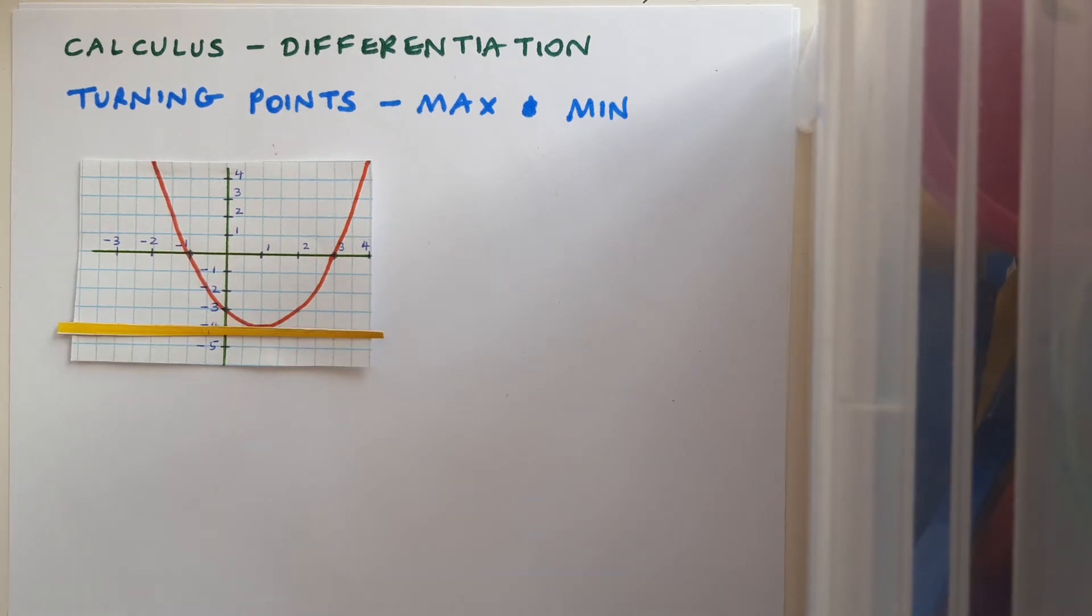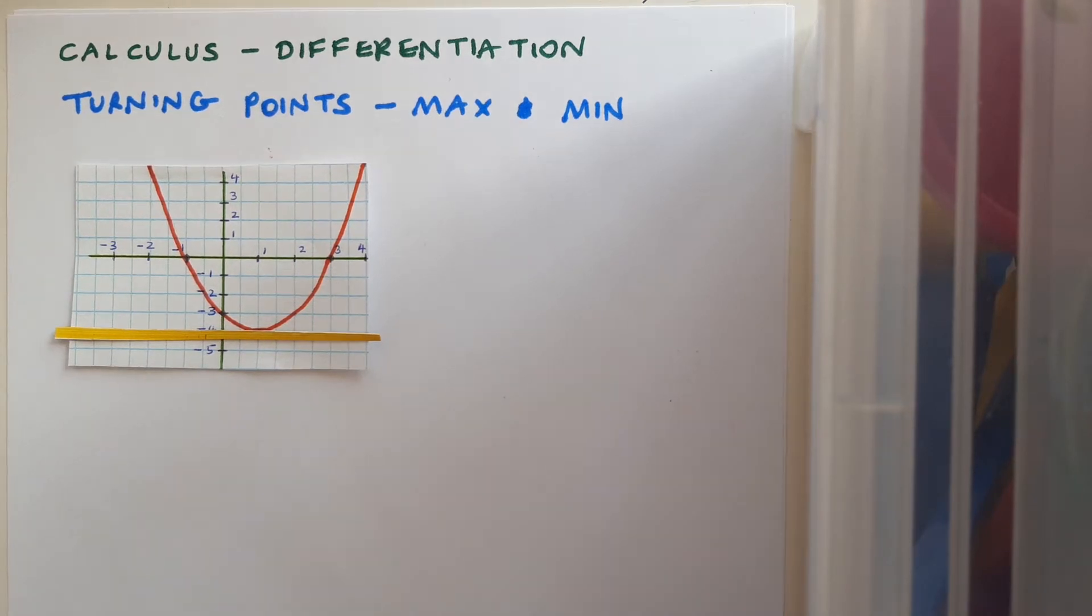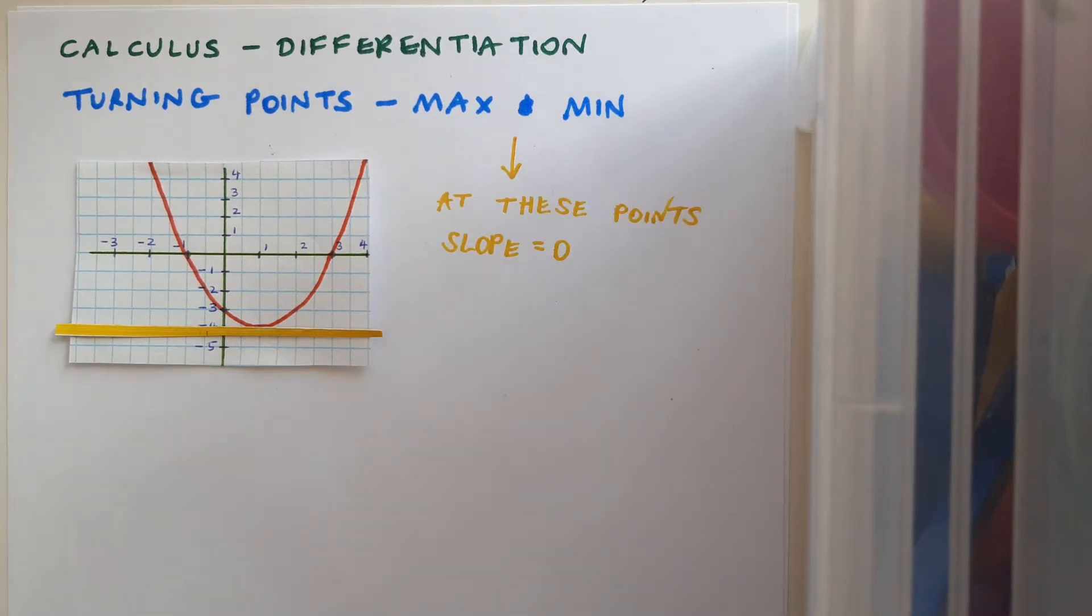And here's what a tangent would look like on the decreasing side and on the increasing side. But in between those two options, increasing and decreasing, we have a third option: the point at which the curve is neither increasing nor decreasing. At this point its tangent is horizontal, and if a line is horizontal, then its slope is equal to zero. So at these max and min points, slope is equal to zero.